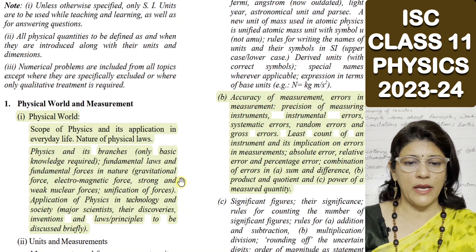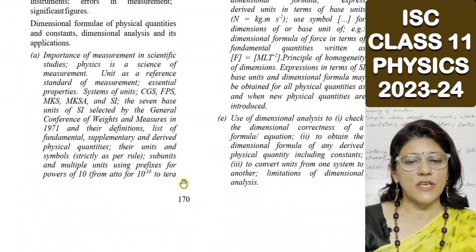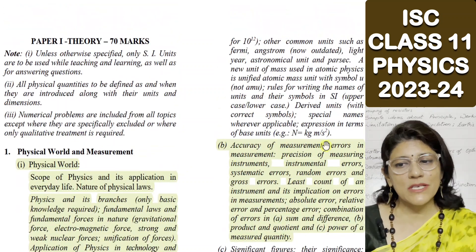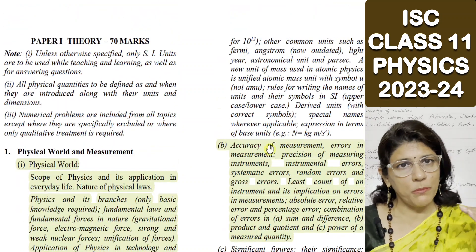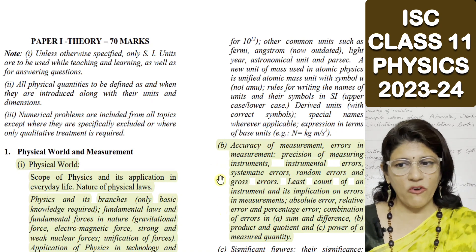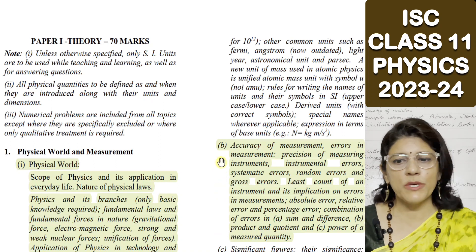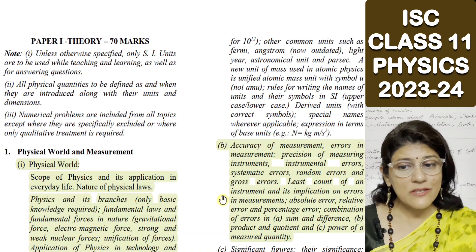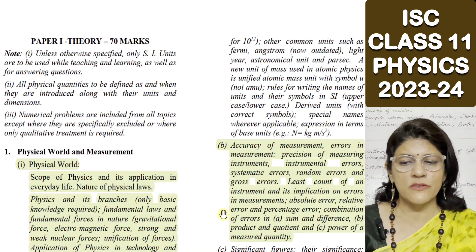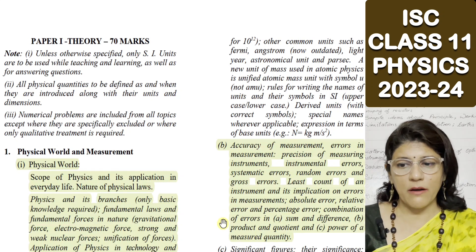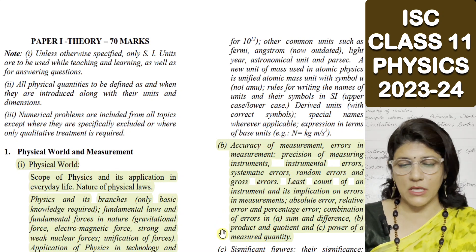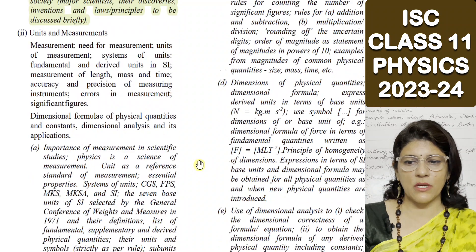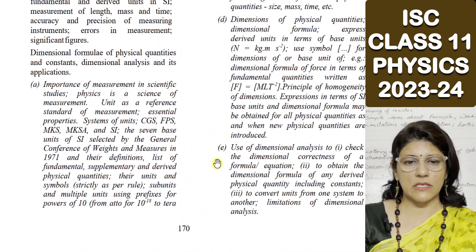The second sub-unit, Units and Measurement, is fully intact. Sub-topic A is completely as it is. In sub-topic B, however, accuracy of measurement is entirely deleted: accuracy of measurement, errors in measurement, precision of measuring instruments, instrumental errors, systematic errors, random errors, gross errors, least count of an instrument, implication on errors and its measurement, absolute error, and relative error — all these topics are deleted. The remaining topics — significant figures and dimensions of physical quantities — are intact.